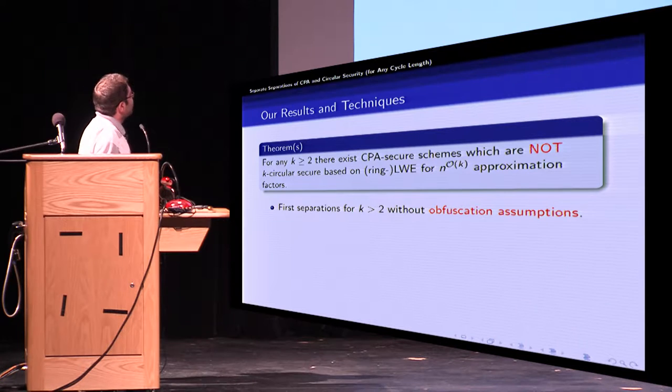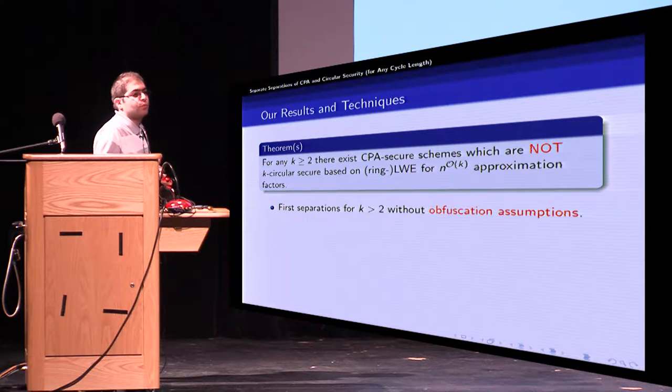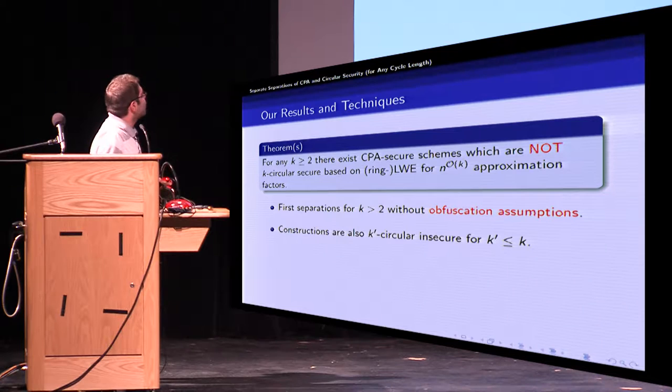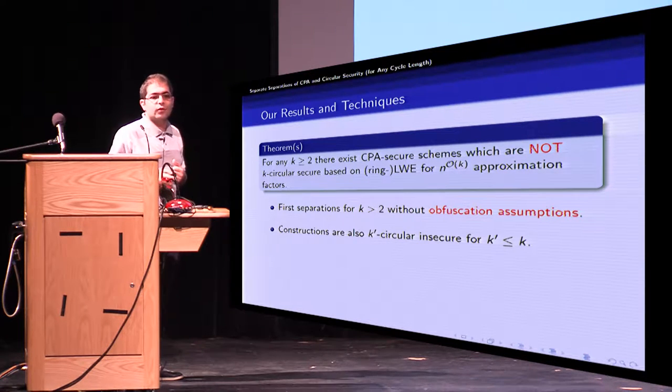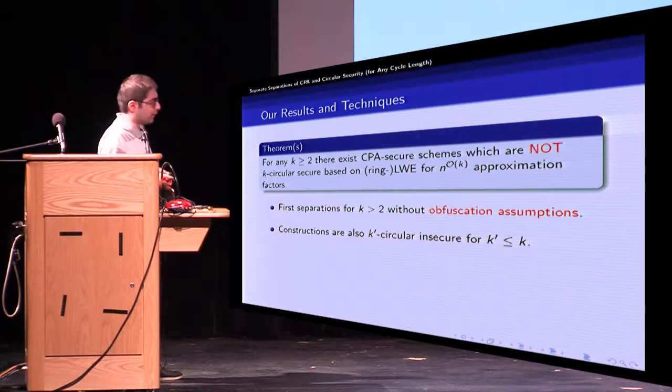These are first separations for K greater than two that do not rely on obfuscation assumptions and constructions are not specific for just K. They are also K-prime circular insecure for K-prime less than K.